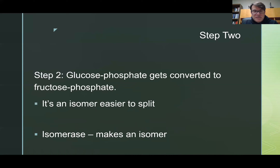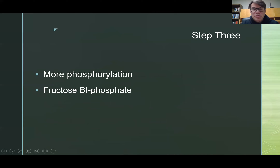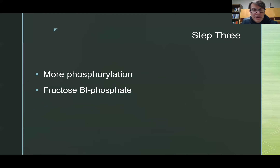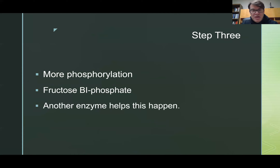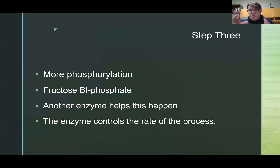Step three: more phosphate — more phosphorylation. It now becomes fructose bisphosphate. Bi means two. Some of the enzymes involved in this process help control the rate — the enzyme stops helping things happen when it's got enough ATP, essentially saying 'I'm not doing the Rubik's cube anymore until we get some of you people out of here.'